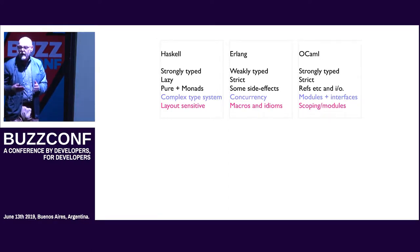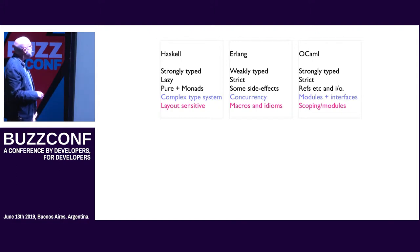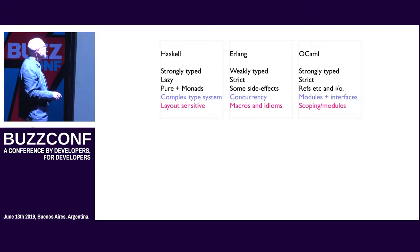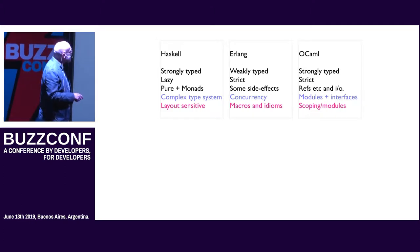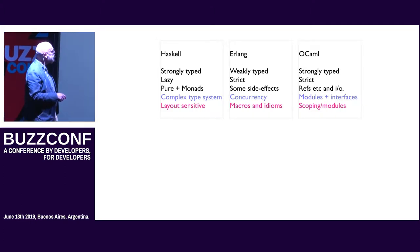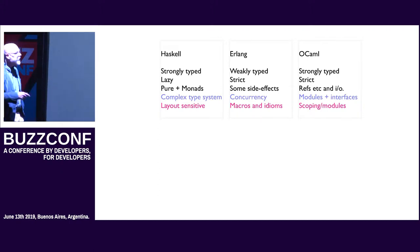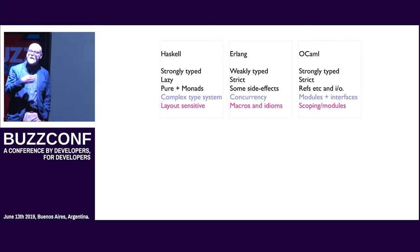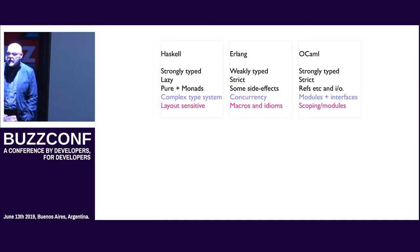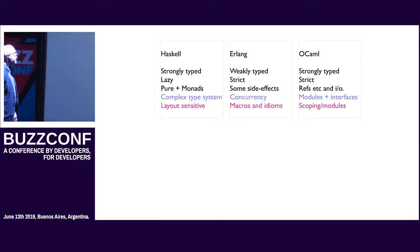These are all functional languages, but they're quite different — quite different things going on. You've got lazy evaluation; Haskell is entirely pure. Whereas Erlang has some side effects; it's strict. OCaml has some side effects; again, it's strict. Erlang is weakly typed. OCaml is strongly typed, as is Haskell. So there's a lot of variation within that family of languages.